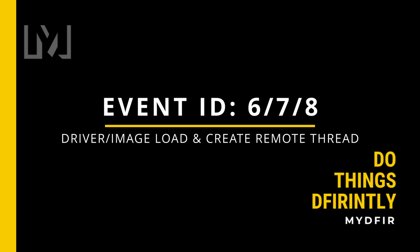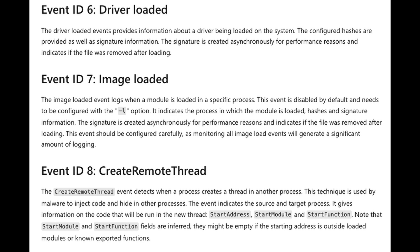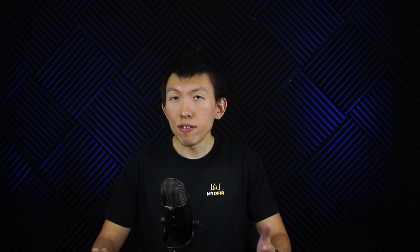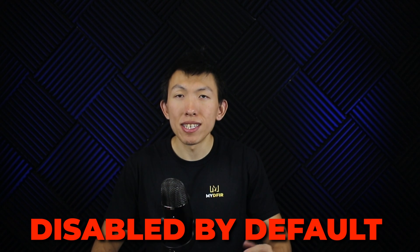Enabling network connection logging is super powerful and highly recommended if you aren't already capturing network-related activity. Event IDs 6, 7, and 8 — driver/image load and create remote thread — could identify potential defense evasion techniques such as process injection, where an attacker could inject their code into a separate process to achieve their objective. This is a common technique used in the wild to bypass antivirus and EDRs, endpoint detection and response. Do note these event IDs can be quite noisy with many false positives, but using the process GUID of an interesting event can help you see the bigger picture. Note that event ID 7, image load, is disabled by default.